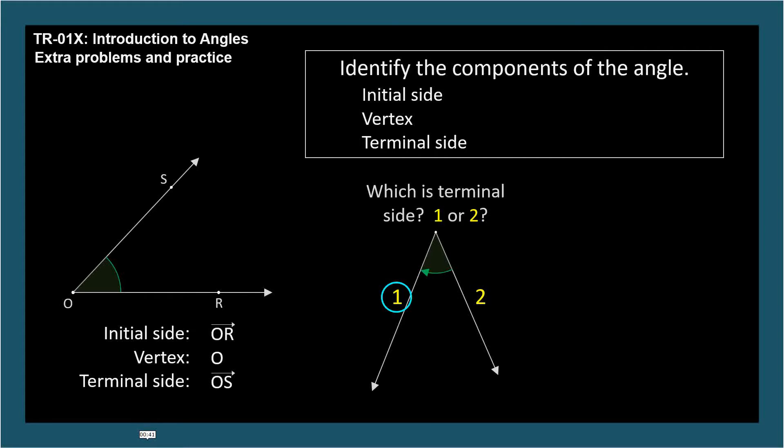Which is the terminal side, A or B? The terminal side has the arrow's point, so side A, and this is a negative angle.